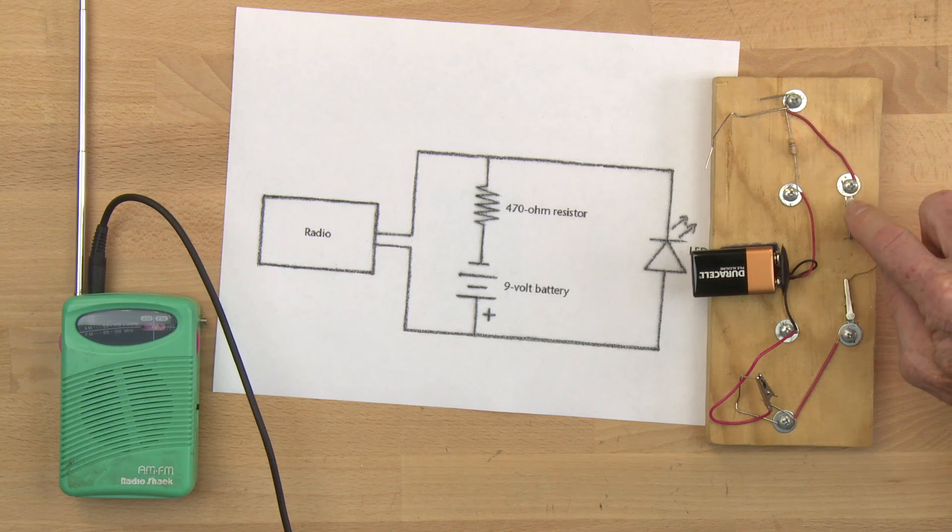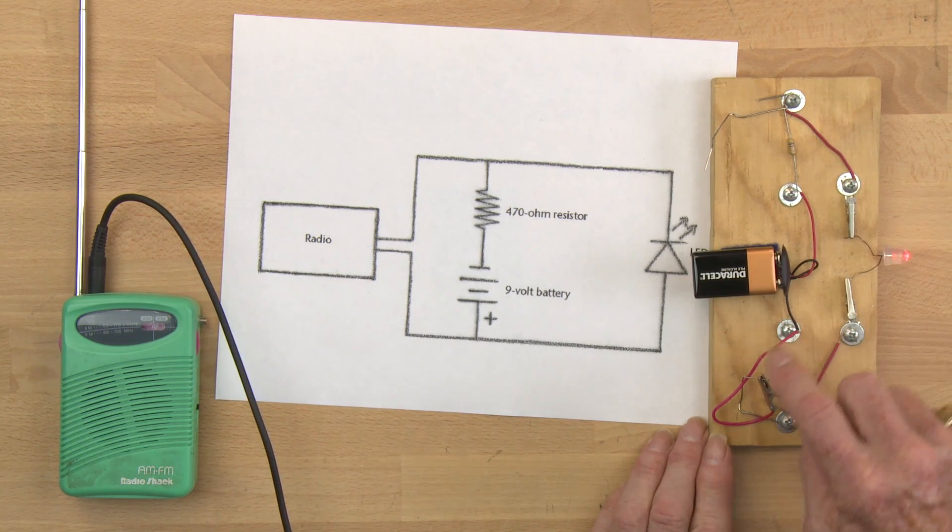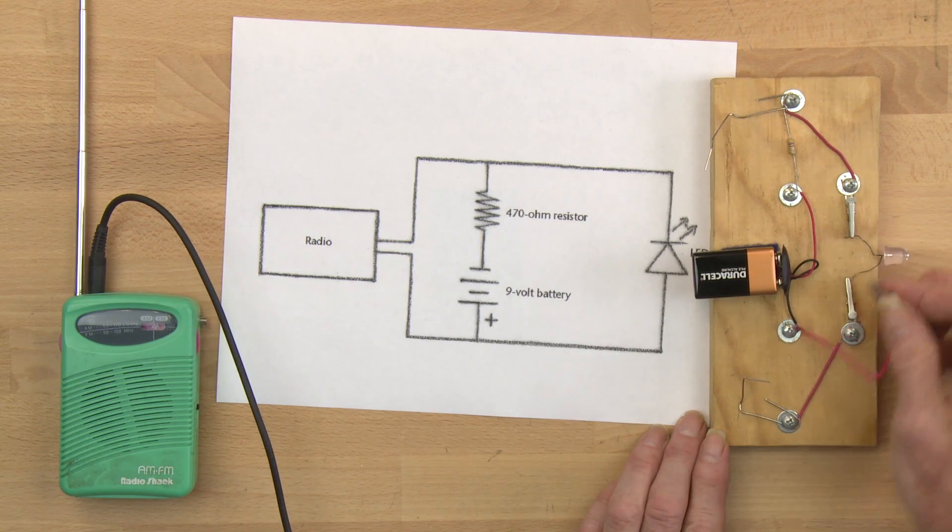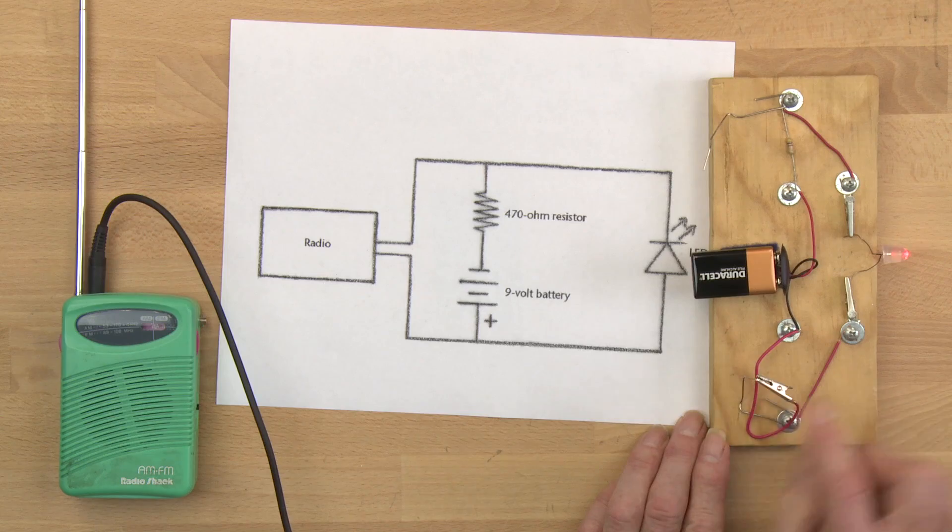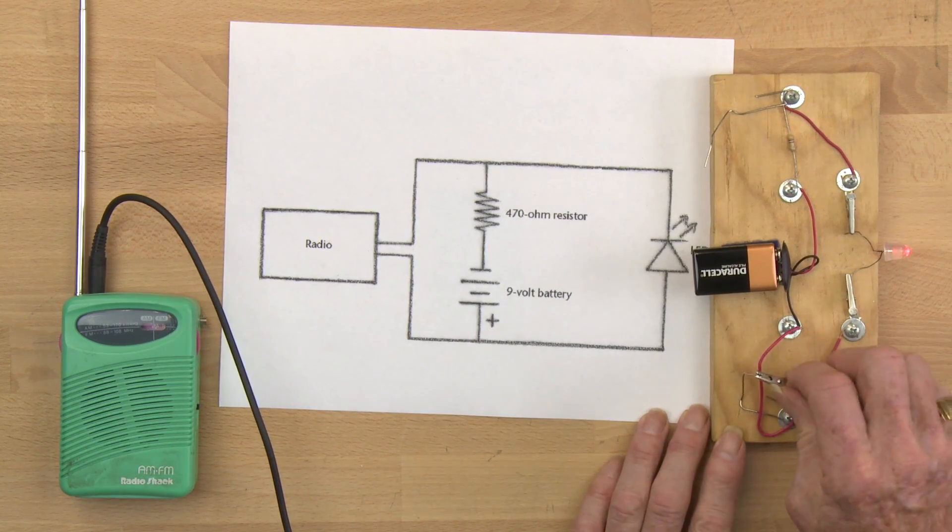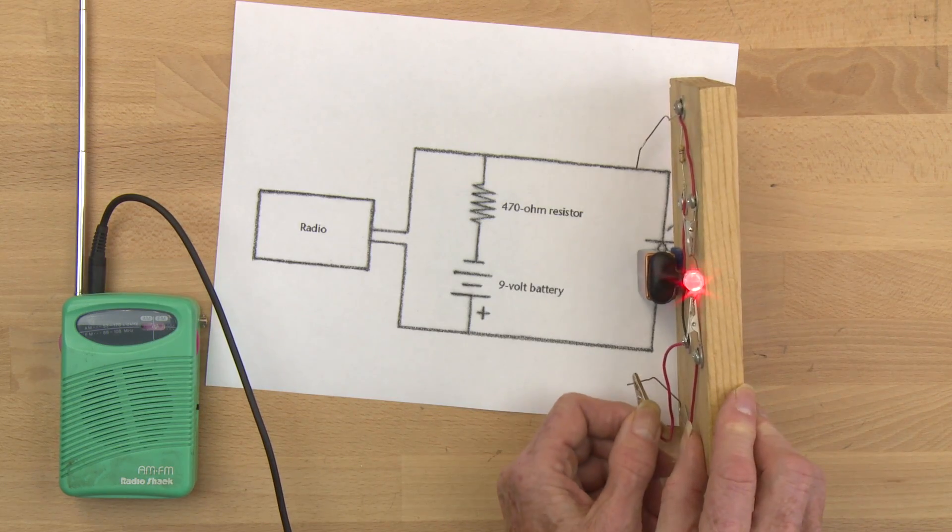And it goes out and it connects to one side of the light emitting diode. And the black lead goes to the other side of the light emitting diode. Now my switch is simply an alligator clip that I clip to a bent paper clip. And that's how I turn my light emitting diode on and off.